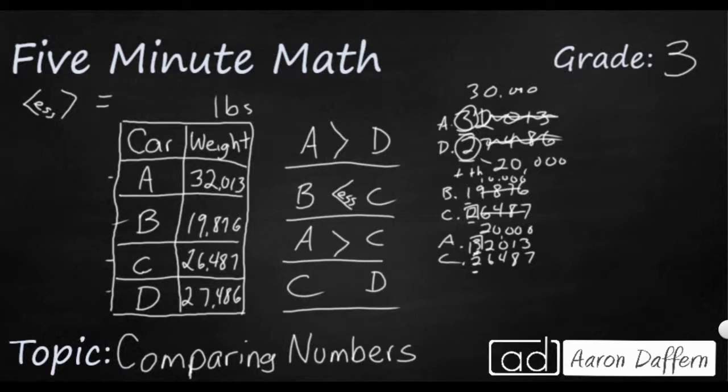Now the last one is going to be a little bit different. We are going to have to move beyond just the 10,000. Because if you look at this C number 26,487 and the D number 27,486, they're very similar. They just kind of swapped a few digits. And if you start at your largest place value, in this case the 10,000 place, they're equal.